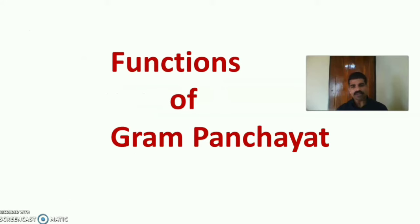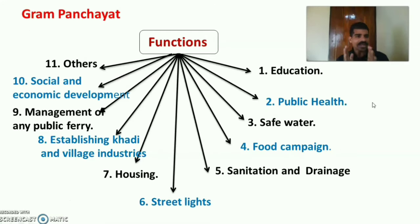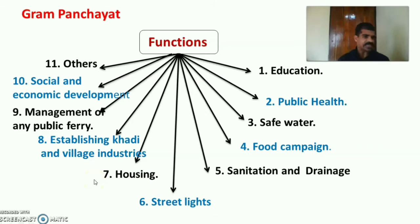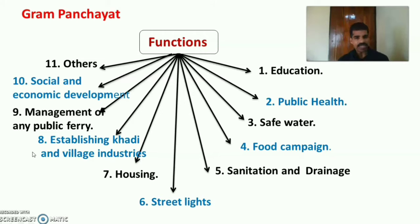Functions of Gram Panjayat — there are more than ten functions. First is education. Second is public health. Third is safe water supply. Fourth is food campaign. Fifth is sanitation and drainage. Sixth is street lights. Seventh is housing. Eighth is establishing khadi and village industries. Ninth is management of any public ferry. Tenth is social and economic development, and others.